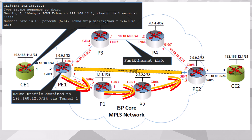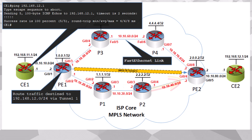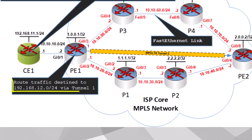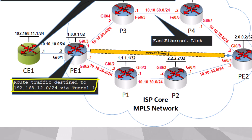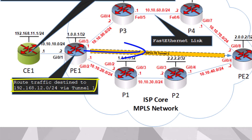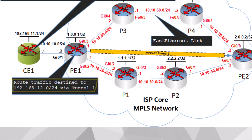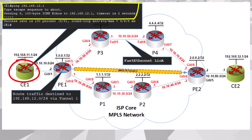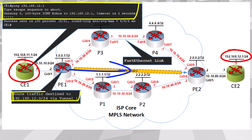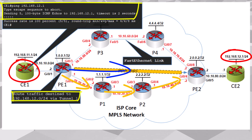PE1 has been configured to route traffic destined to the 192.168.12.0/24 network via the TE tunnel — done either via auto-route, static routing, or PBR. Now let's say CE1 pings the customer network behind CE2. That traffic will go via the tunnel due to this routing configuration. The tunnel itself goes via P1 and P2, so this would be the physical path taken.